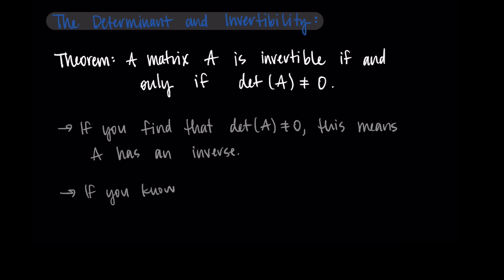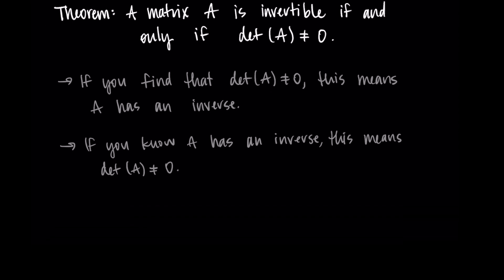You can also go the other direction. So if you know that A has an inverse, this will mean that the determinant cannot be zero. So you get both implications this way. You can start with having an invertible matrix and then you can know for sure that the determinant is non-zero, or you can know that the determinant is non-zero and this will tell you that the matrix is invertible.